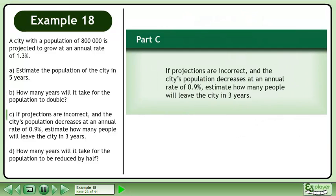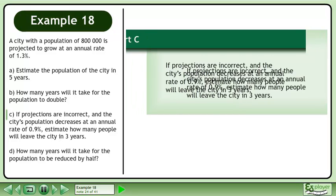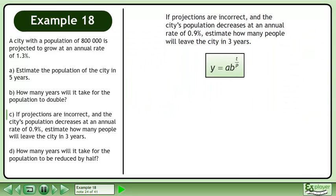Now we'll move on to Part C. If projections are incorrect and the city's population decreases at an annual rate of 0.9%, estimate how many people will leave the city in 3 years. We can use the exponential form y equals a times b raised to the power of t over p to answer this question.